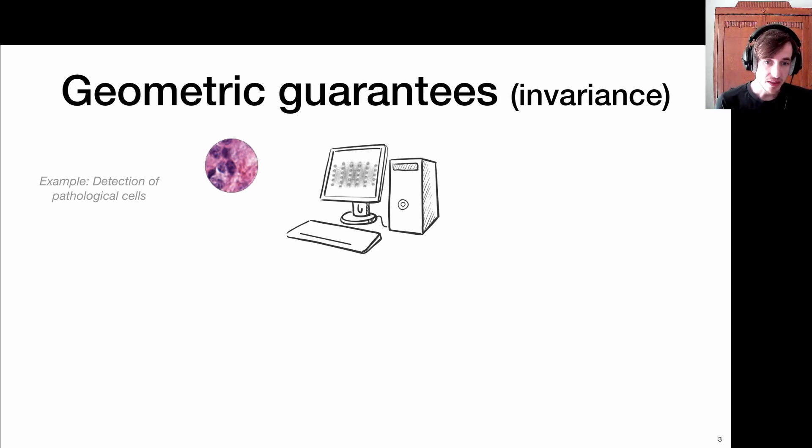In many applications, we want to build neural networks that have some geometric guarantees, most notably that of invariance. Consider this example in histopathology where we want to classify a cell as being either healthy or pathological. We're looking at an invariant problem here. The pose or orientation on which I image the cell is completely arbitrary. If I rotate it, it's still the same cell. You would hope that the neural network still says it's a healthy cell. But we don't have this guarantee. It might even say the exact opposite. And in many applications, this is completely problematic.